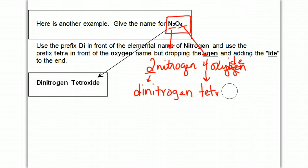It's not a big deal if you don't remember to do this on the test. It's just kind of the formality. So this would be tetroxide. So dinitrogen tetroxide is the name for this one.